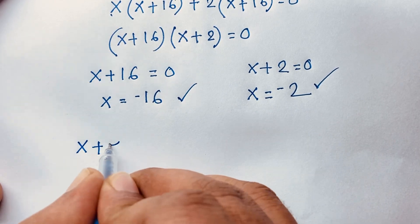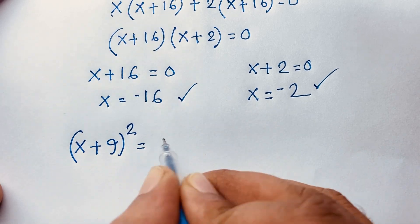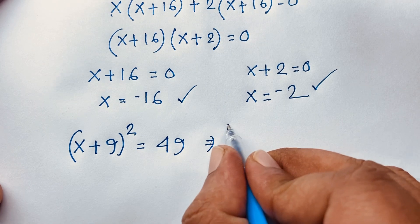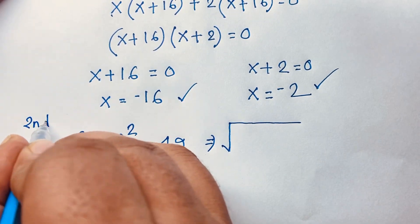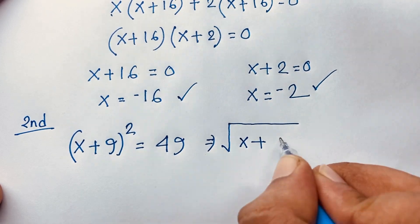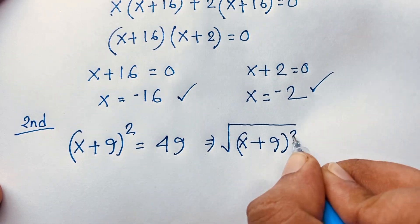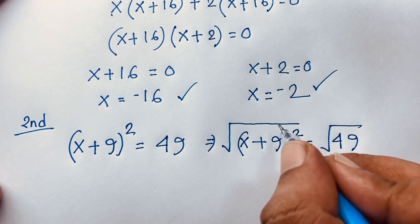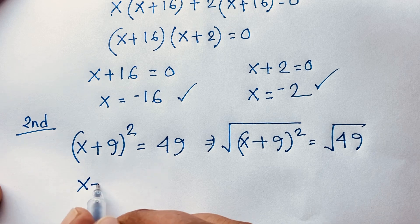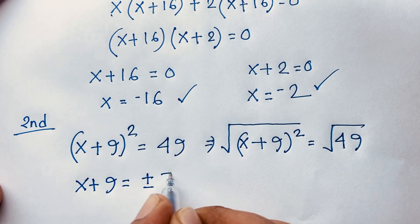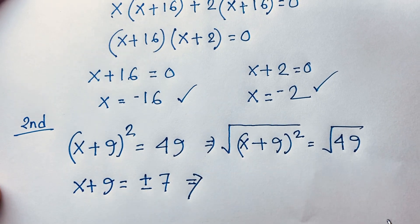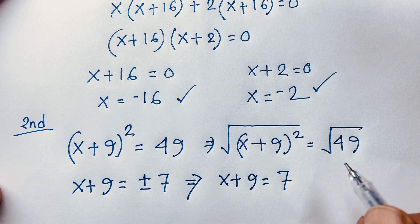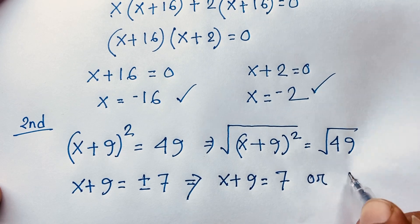Now the second method. Our question is x plus 9, whole to the power 2, is equal to 49. I use square root on both sides: square root of (x plus 9) squared equals square root of 49. The square and square root cancel, giving us x plus 9 equals plus or minus 7. Two cases: x plus 9 equals positive 7, or x plus 9 equals negative 7.